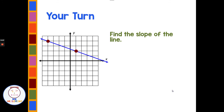Pause the video to find the slope of this next one, then come back. Welcome back! Using rise and run, I count two spaces going up for rise, and one, two, three, four, five spaces for run. The line goes down from left to right, so the slope is negative two-fifths.